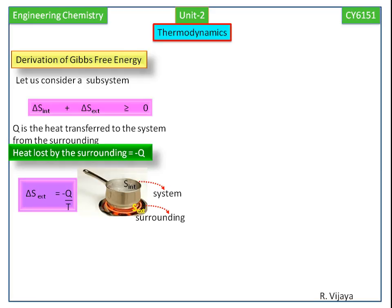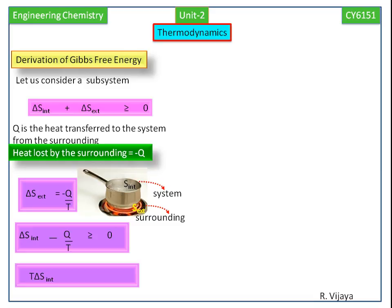Delta S external is the entropy change of the surrounding. Substituting this value in the above equation and rearranging, we get T delta S internal minus Q greater than or equal to 0.